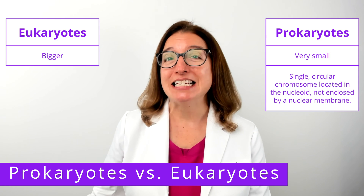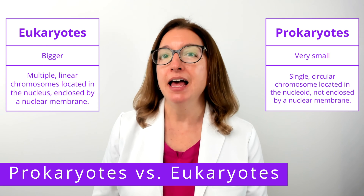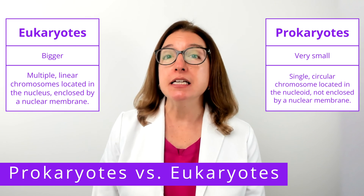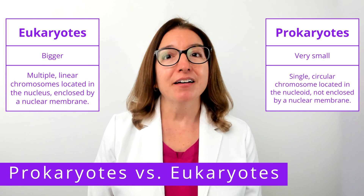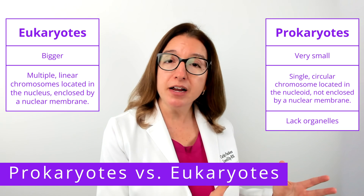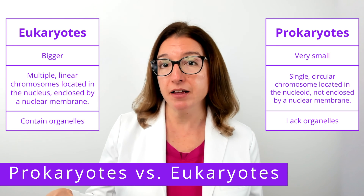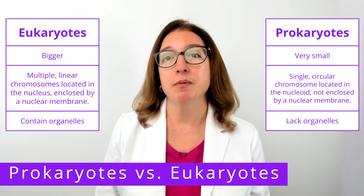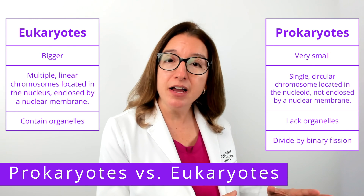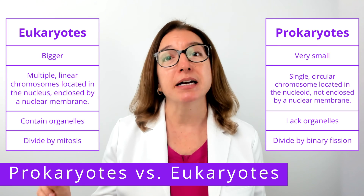By contrast, the DNA in eukaryote cells is contained in multiple linear chromosomes, and these chromosomes are located in the nucleus of the cell, which is enclosed in a nuclear membrane. Other key differences: prokaryotes do not contain any organelles, whereas eukaryote cells contain various organelles such as mitochondria and lysosomes. In addition, prokaryotes divide via binary fission, whereas eukaryote cells divide via mitosis.